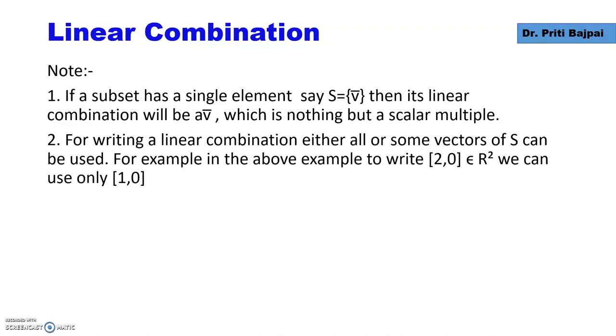Few things to note. If a subset has a single element, say the subset S has a single element vector v, then its linear combination will be just a scalar multiple A into the vector.